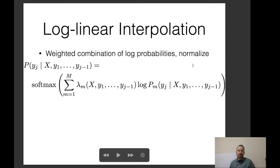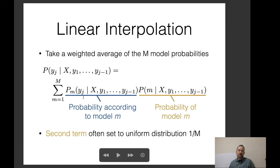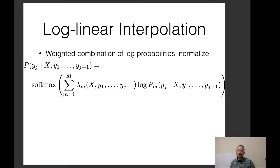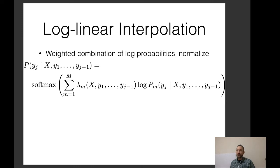The second option is log-linear combination of model probabilities. Instead of averaging over probabilities, we take the average over log probabilities, with a coefficient for each model's weight. Unlike linear interpolation, a linear interpolation of multiple log probabilities is not a well-formed log probability — if you exponentiated and summed them all, you would not get a value of one. So after doing this, you need to take a softmax to re-normalize and make it a well-formed probability.